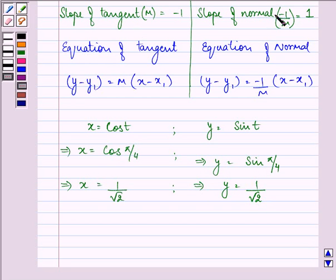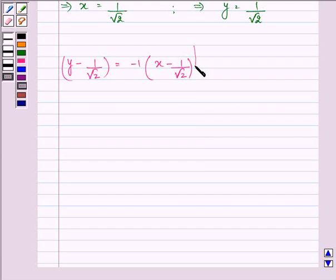Now we have the slopes. We have the value of x1 and y1. So on substituting the values we have y minus 1 by root 2 equal to minus 1 x minus 1 by root 2. This is for tangent and y minus 1 by root 2 equal to 1 x minus 1 by root 2 is the equation of the normal. Let us simplify it.